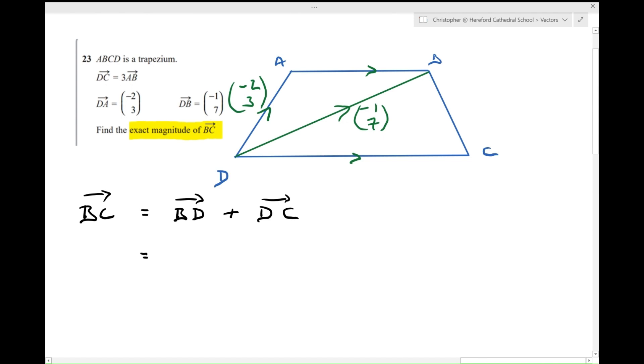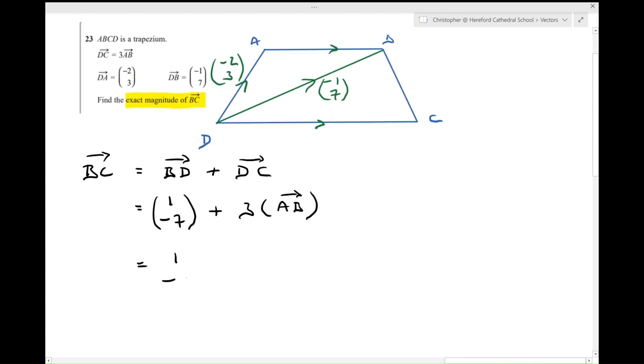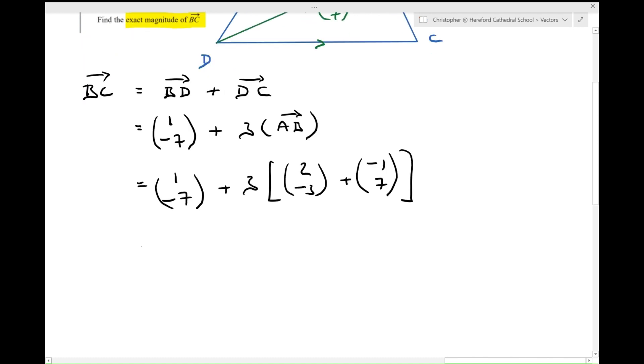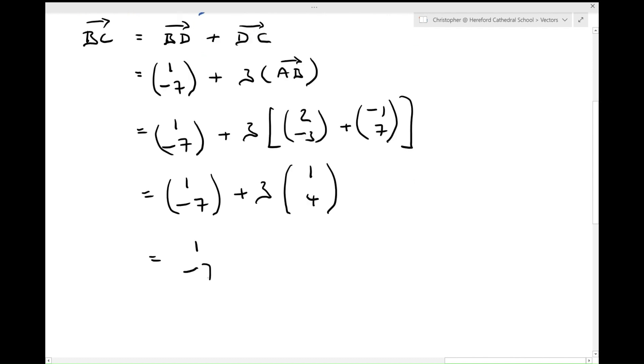All right. Now, B to D, I already know. That's the opposite of (-1, 7). So that's going to be (1, -7). Plus DC. Well, DC is 3 times AB, isn't it? But, okay, now, that's going to be (1, -7), plus 3 times AB. Well, what's AB? Well, if I was going from A to B, I would go from A to D, which would be (2, -3). And then I would go from D to B, which would be (-1, 7). So that's going to equal (1, -7), plus 3 times what? (1, 4). Yep. Okay, so that's going to be (1, -7), plus (3, 12), which is (4, 5).